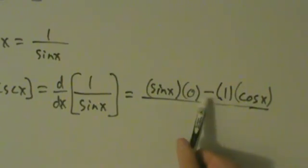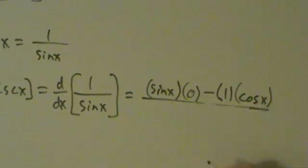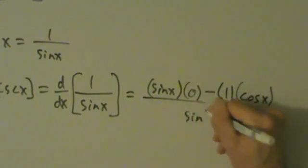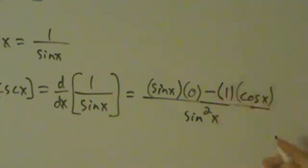Okay, bottom times the derivative of the top, minus the top, times the derivative of the bottom, all divided by the bottom squared.